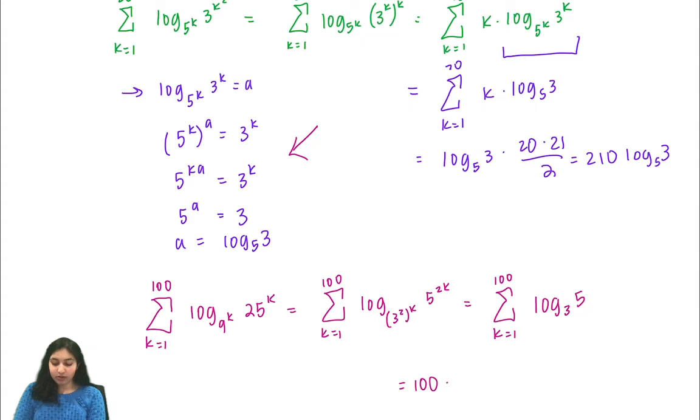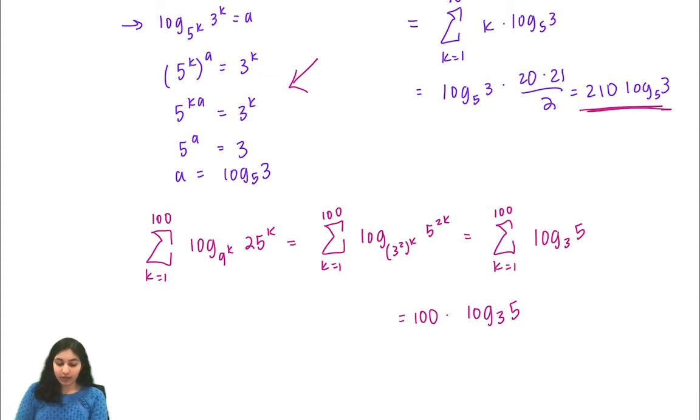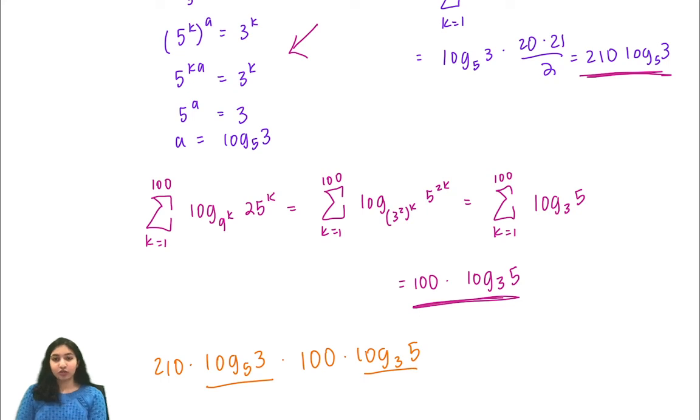If you remember earlier in the problem we want to find a product of this expression and this expression down here. That is going to be 210 times log base 5 of 3 times 100 times log base 3 of 5. Now if you watched our logarithms video, you'll remember that these are—their product is just equal to 1. So our answer is 210 times 100 times 1, which is just 21,000, which is answer choice E.